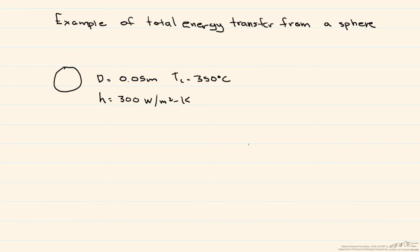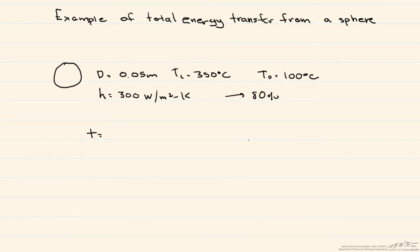The sphere is suddenly removed from the furnace where it's heating and placed into a bath that has a convective heat transfer coefficient of 300 watts per meter squared Kelvin. After 80% of the thermal energy is removed, the centerline temperature T0 is equal to 100 degrees C. What we want to know is how long does it take for the centerline temperature to be 100 degrees C?